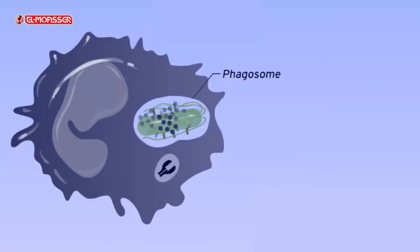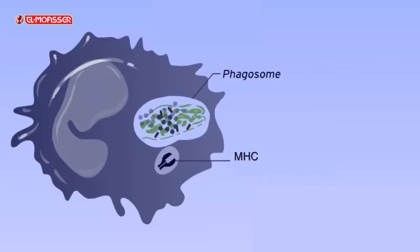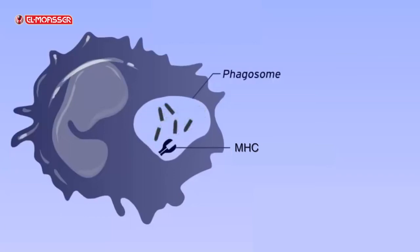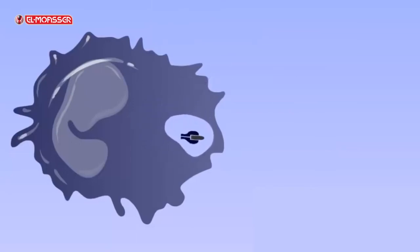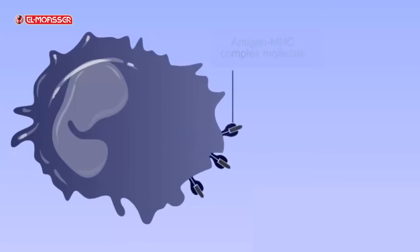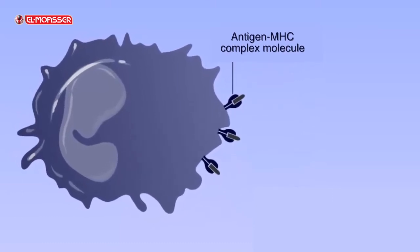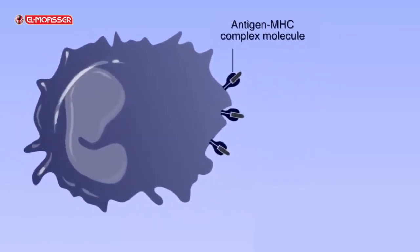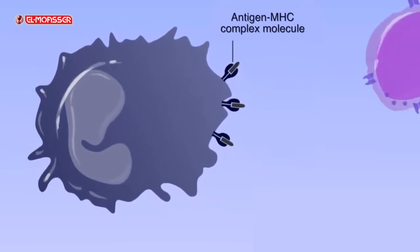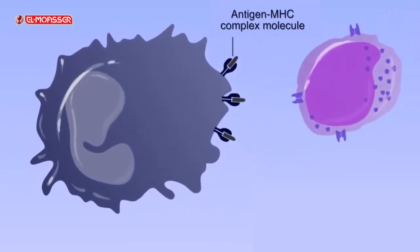The lysosomes inside the macrophages pour enzymes onto the bacteria and disintegrate them into small particles, separating the antigens from them. Inside the macrophages there is a protein called the major histocompatibility complex protein, denoted by MHC.